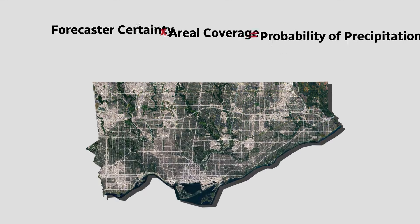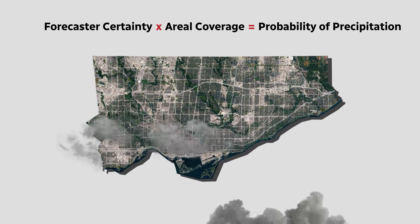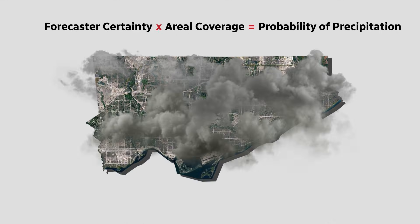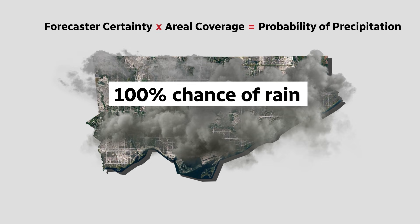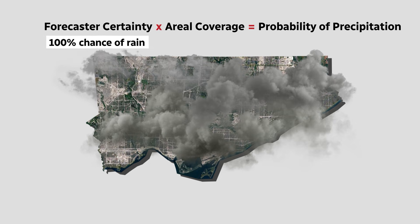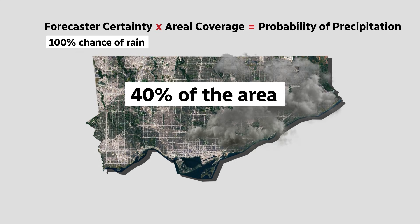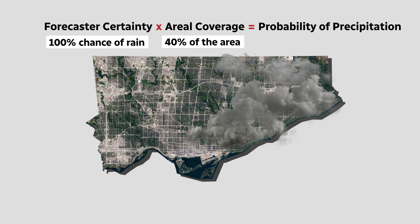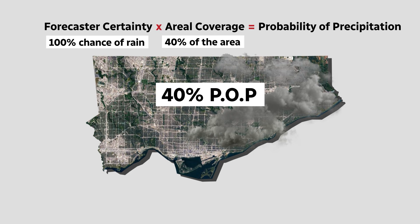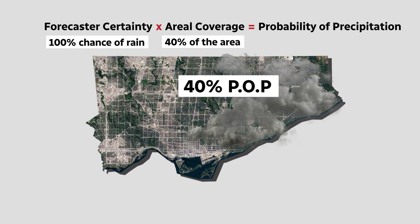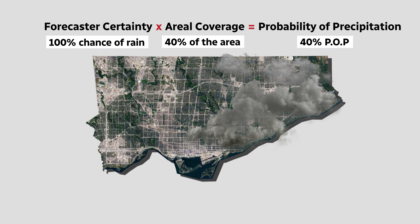We meteorologists do our forecasting for a time frame. For example, if I'm 100% sure it'll rain this evening, then multiply that by how much area will be hit. Let's say it's only 40% of the region — so that's a 40% chance of rain.